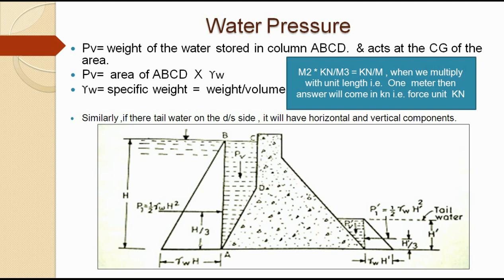We assume unit length of 1 meter, so the force comes out in kilo-Newtons, since force or weight is always expressed in kilo-Newtons. If tail water exists on the downstream side, the same calculations are done but in the opposite direction — the horizontal component acts in the opposite direction and the vertical component acts downward.